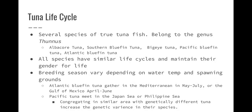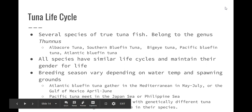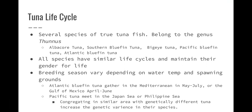Several species of true tuna fish belong to the genus Thunnus. The main species are albacore, southern bluefin tuna, bigeye tuna, Pacific bluefin tuna, and Atlantic bluefin tuna. All these tuna species have similar life cycles, although some differences occur with spawning grounds and the ages at which sexual maturity develops. Sexes appear to be fixed, and there are no records of tuna changing sex during their lives.